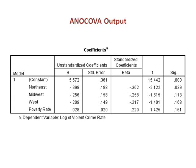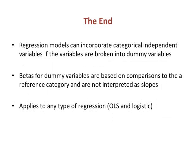The beta for poverty rate is interpreted as a slope. What we learned in this presentation is that regression models incorporate categorical independent variables alongside numeric variables if the categorical variables are broken into dummy variables. Betas for dummy variables are based on comparisons to a reference category and are not interpreted as slopes. This technique applies to any type of regression, both OLS and logistic.